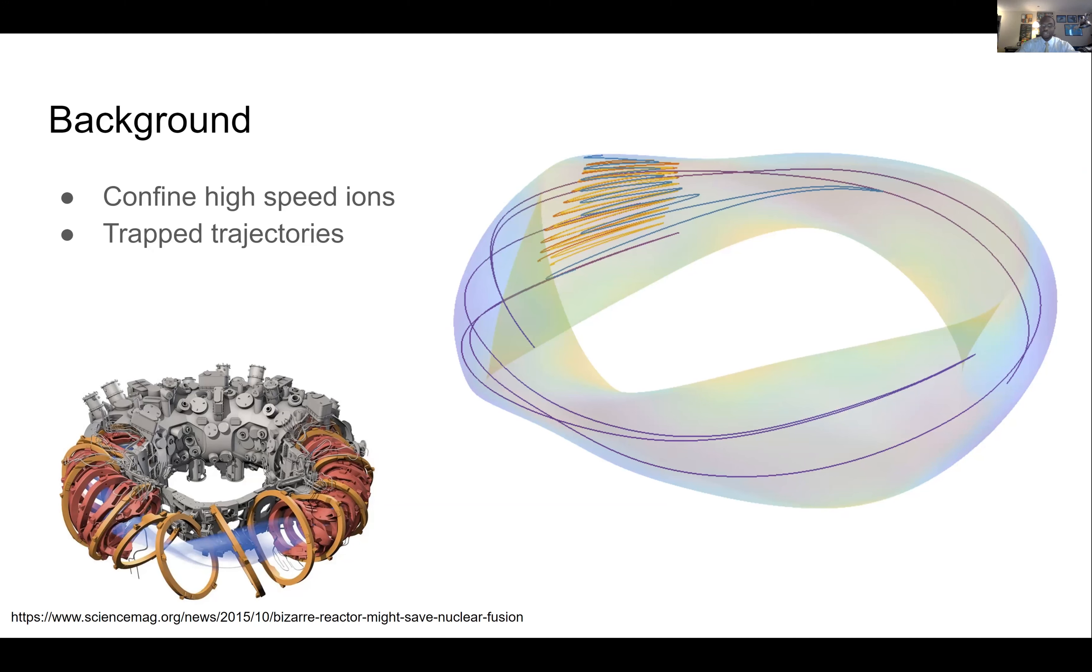So there are actually two different types of trapped trajectories. And the first is the ripple trapped ion. An ion that's ripple trapped is going to stay in one corner of the reactor and quickly bounce its way out. Ripple trapped trajectories are extremely undesirable because they are lost really quickly. The sooner you lose a particle, the more energy it's going to have and the more damage it's going to cause to the reactor wall.